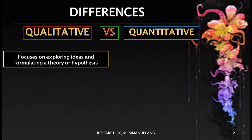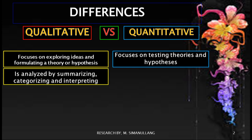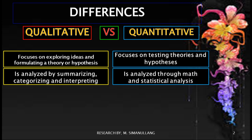Normally, qualitative research focuses on exploring ideas and formulating a theory or hypothesis, while the purpose of quantitative research normally focuses on testing theories and hypotheses. The data in qualitative research is analyzed by summarizing, categorizing, and interpreting — in other words, analyzed descriptively — while in quantitative research the data is analyzed through math and statistical analysis.